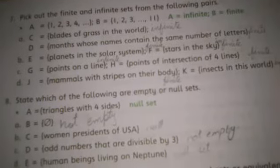In part D, D is equal to months whose names contain the same number of letters. We can count and know the names of the months that contain the same number of letters, so it is a finite set.